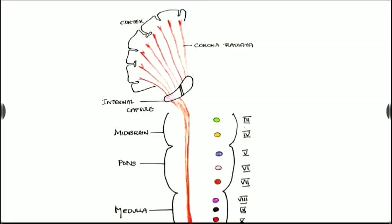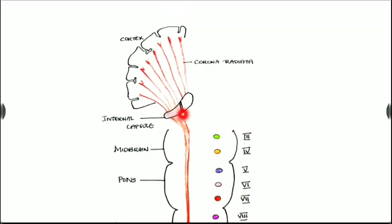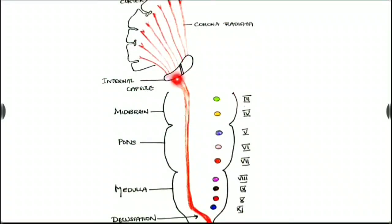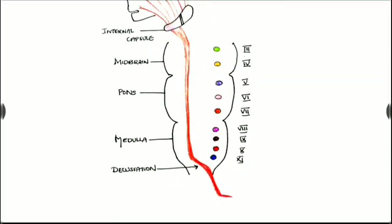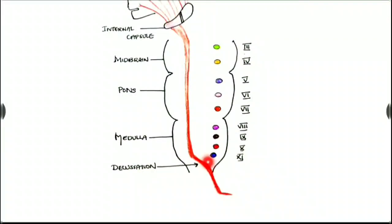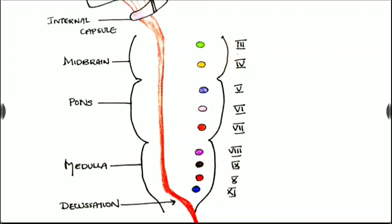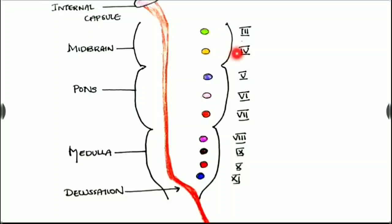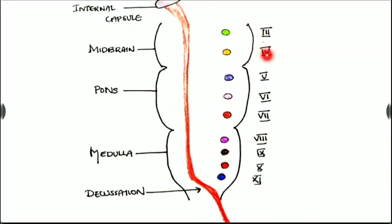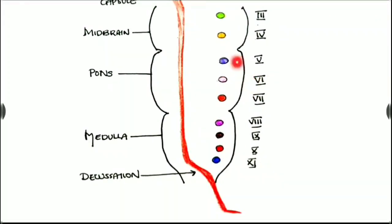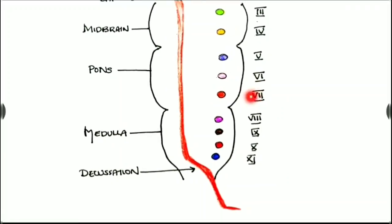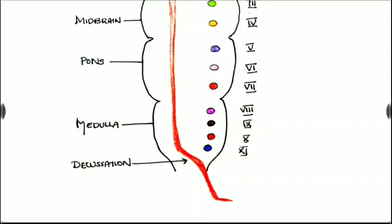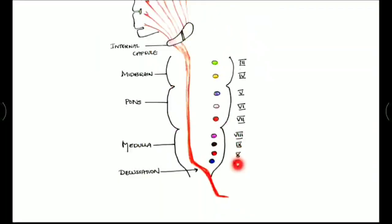This is the pathway of the pyramidal tract. From the cortex, all the nerves come and join the internal capsule as the corona radiata. At the internal capsule, via the posterior limb of the internal capsule as a compact, closely packed bundle, the pyramidal tract descends via the midbrain, pons, and medulla. Towards the end of the medulla it crosses to the opposite side — known as the motor decussation — and supplies the opposite part of the body. In the midbrain there are the third and fourth cranial nerve nuclei. In the pons there are three cranial nerve nuclei: the fifth trigeminal, the sixth abducens, and the seventh facial. In the medulla: the eighth, ninth, tenth, and eleventh, and towards the end the twelfth.